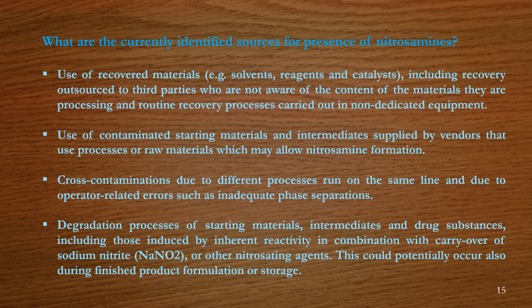Fifth, use of recovered materials such as solvents, reagents and catalysts — including recovery outsourced to third parties who are not aware of the content of the materials they are processing — and routine recovery processes carried out in non-dedicated equipment. Sixth, use of contaminated starting materials and intermediates supplied by vendors that use processes or raw materials which may allow nitrosamine formation. Seventh, cross-contamination due to different processes run on the same line and due to operator-related errors such as inadequate phase separations.